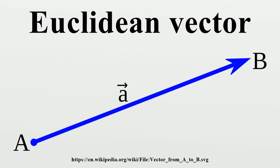That is, they are equivalent if the quadrilateral ABBA is a parallelogram. If the Euclidean space is equipped with a choice of origin, then a free vector is equivalent to the bound vector of the same magnitude and direction whose initial point is the origin. The term vector also has generalizations to higher dimensions and to more formal approaches with much wider applications.